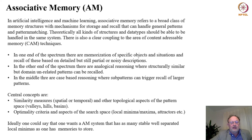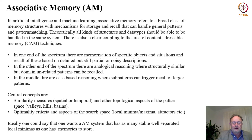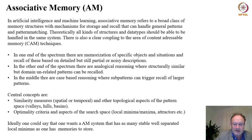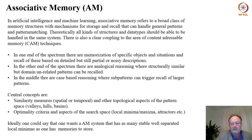In the middle of the spectrum there is case-based reasoning, where partial patterns can trigger recall of larger patterns. Central concepts in associative memory include similarity measures, spatial or temporal and other topological aspects of the pattern space — such as valleys, hills, bastions — optimality criteria, and aspects of the search space like local minima, maxima, and attractors. Ideally, one wants an associative memory system that has as many stable, well-separated local minima as one has memories to store.